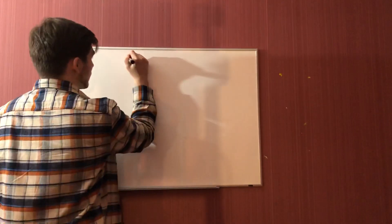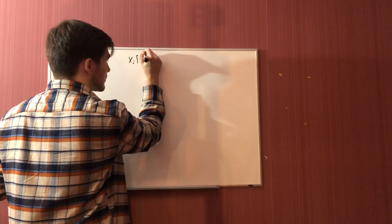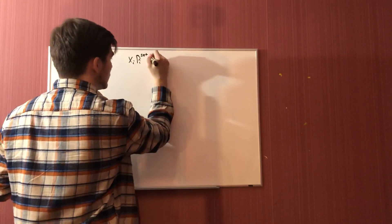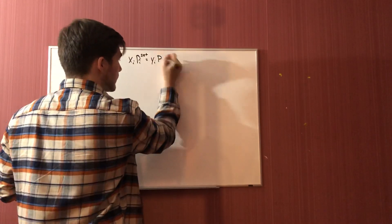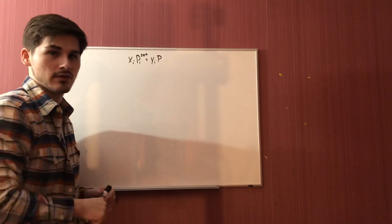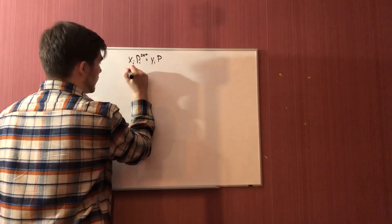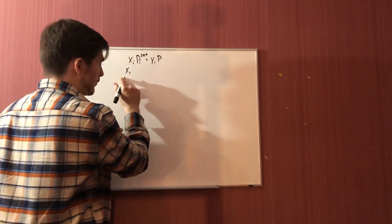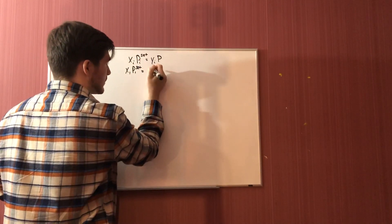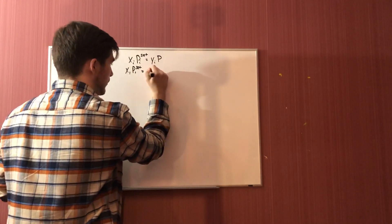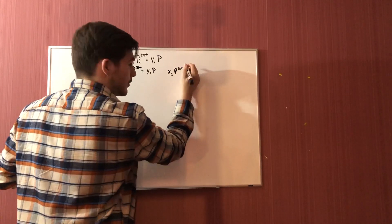We can start with Raoult's law, which states that the liquid mole fraction of component i times its saturation vapor pressure is equal to the vapor mole fraction of component i times the total pressure. Now if we have a binary system with two different components, we can write out this equation for both components: the liquid mole fraction of component one times its saturation vapor pressure equals the vapor mole fraction of component one times the total pressure, and then the same thing for component two as well.